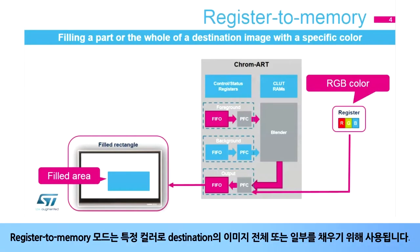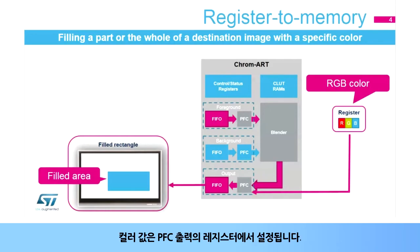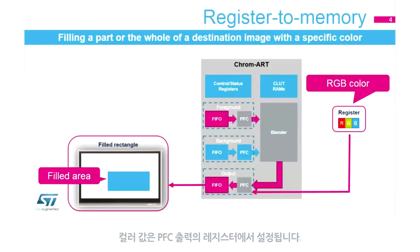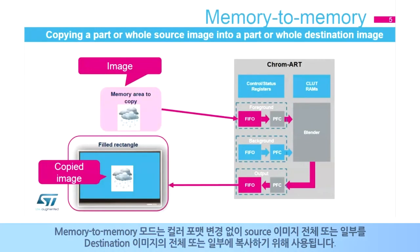Register to memory mode is used to fill a part or whole destination image with a specific color. The color value is set in a register of the output PFC. Memory to memory mode is used to copy a part or whole source image into a part or whole destination image without changing the color format.